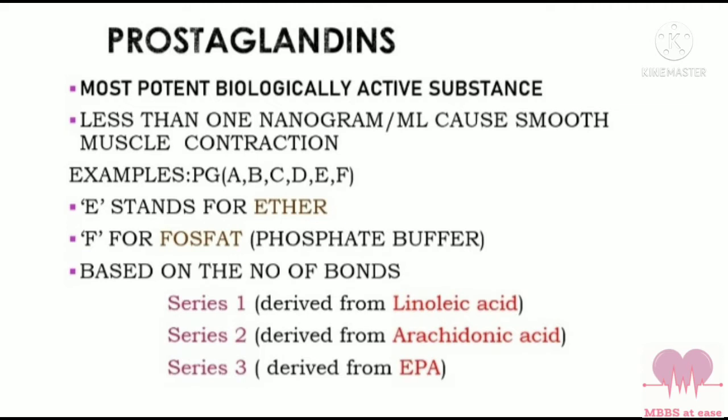Examples of prostaglandins are PGA, PGB, PGC, PGD, PGF, and PGE. 'E' stands for ether because it is soluble in ether, and 'F' stands for phosphate — in Swedish, phosphate is 'fosfat' (phosphate buffer). The three series are derived from linoleic acid, arachidonic acid, and eicosapentaenoic acid.